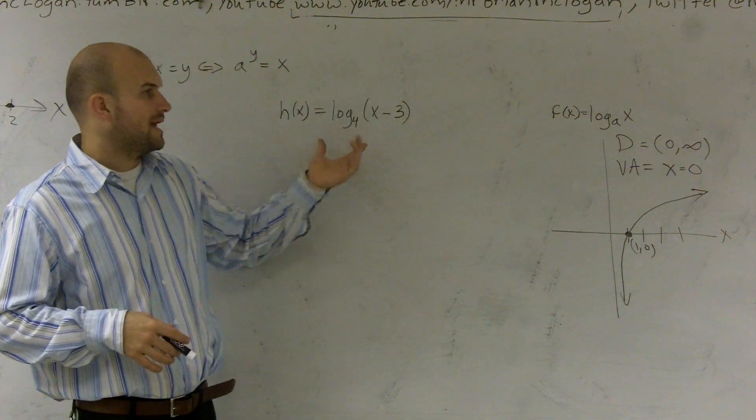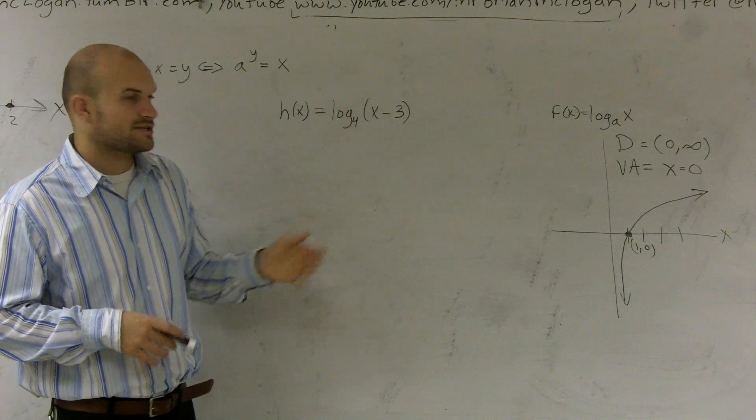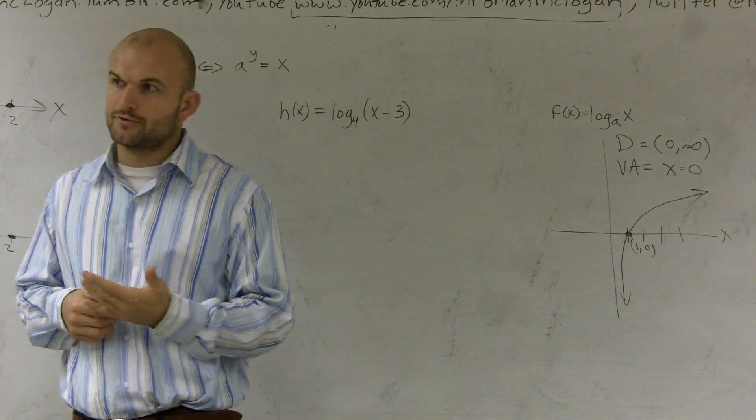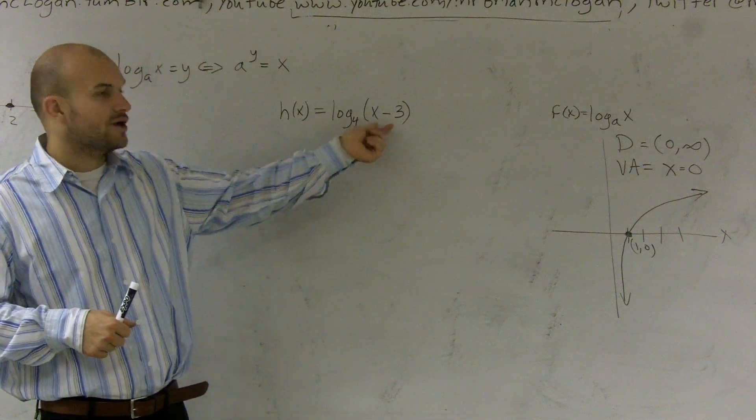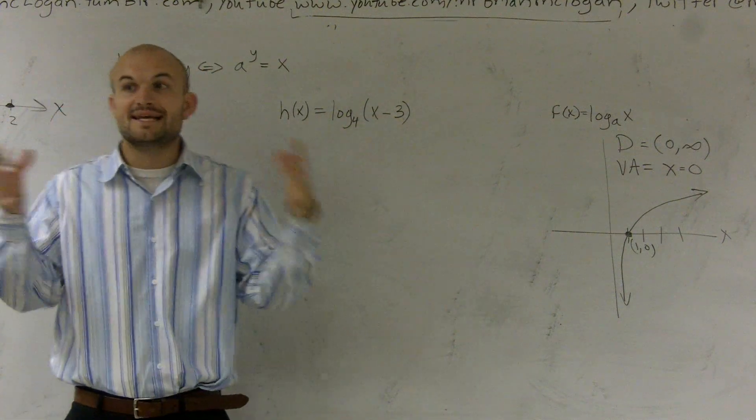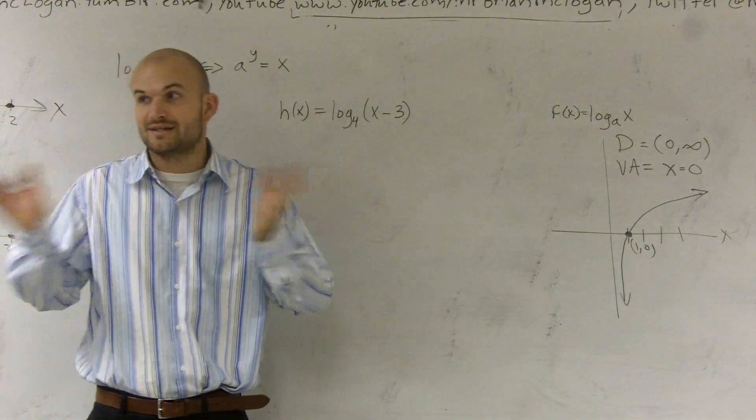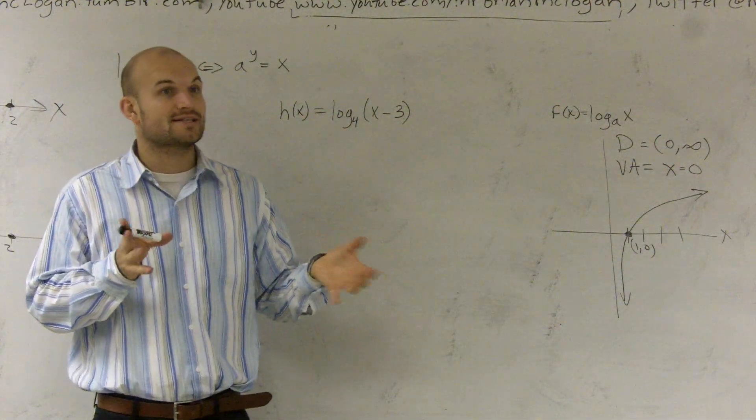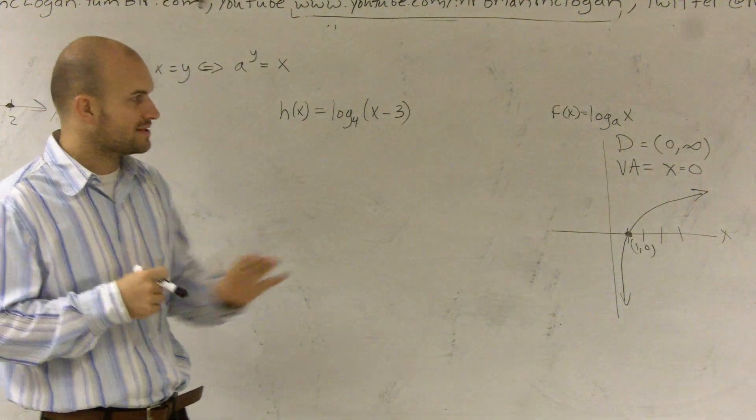Now, it's asking us to find the domain and range of this problem, and we also need to find the x-intercept. So we're going to go through all three points of those. First thing, what I notice is I have an x minus 3. Since it's inside of the function, right, I have it inside of my function, and that's going to tell me I'm going to be shifting left or right. And shifting left or right is going to alter my domain.